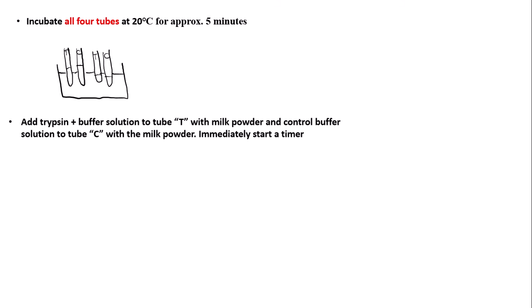Once the incubation period has passed, add your trypsin and buffer solution to tube T with the milk powder, and the control buffer solution to tube C with the milk powder, and immediately start the timer. If you don't start the timer immediately, the trypsin might have already acted on the casein in the milk powder before you start, so your results won't be valid.